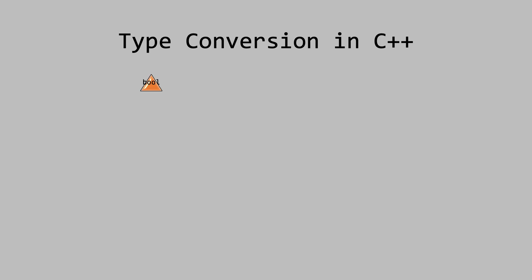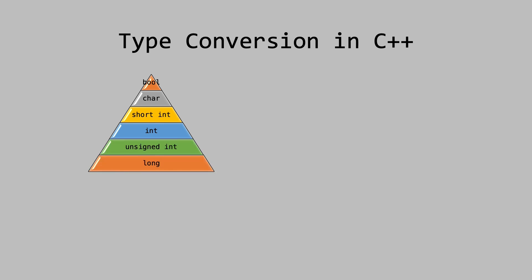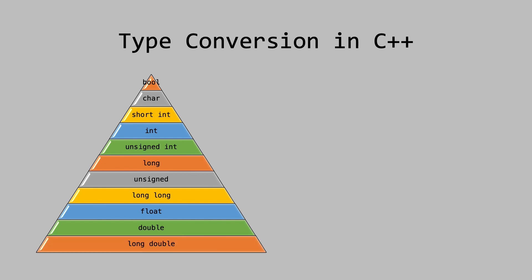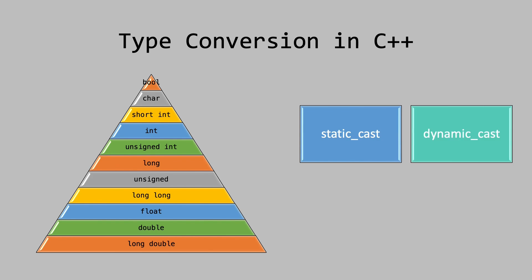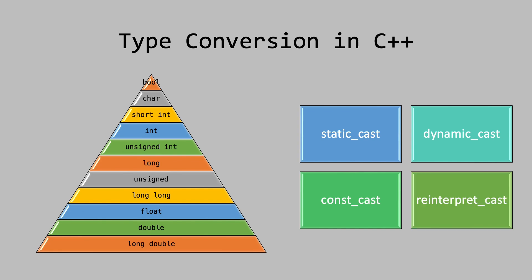Explore conversions. In C++, data type conversions are facilitated through typecasting, which involves transforming a variable from one type to another. Familiarize yourself with casting operators — essential tools for converting one data type to another. C++ provides four distinct types of casts, each serving specific conversion purposes.